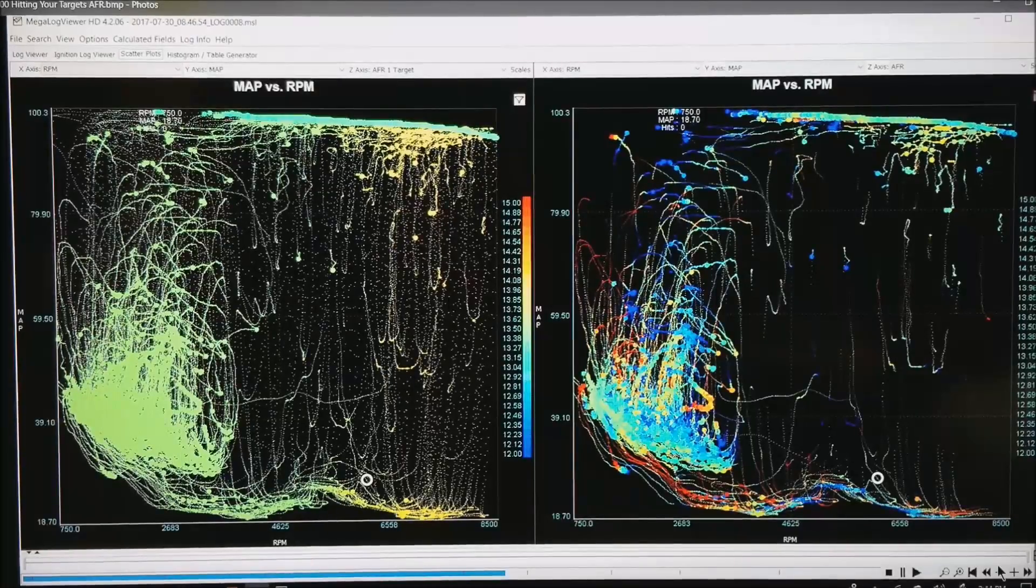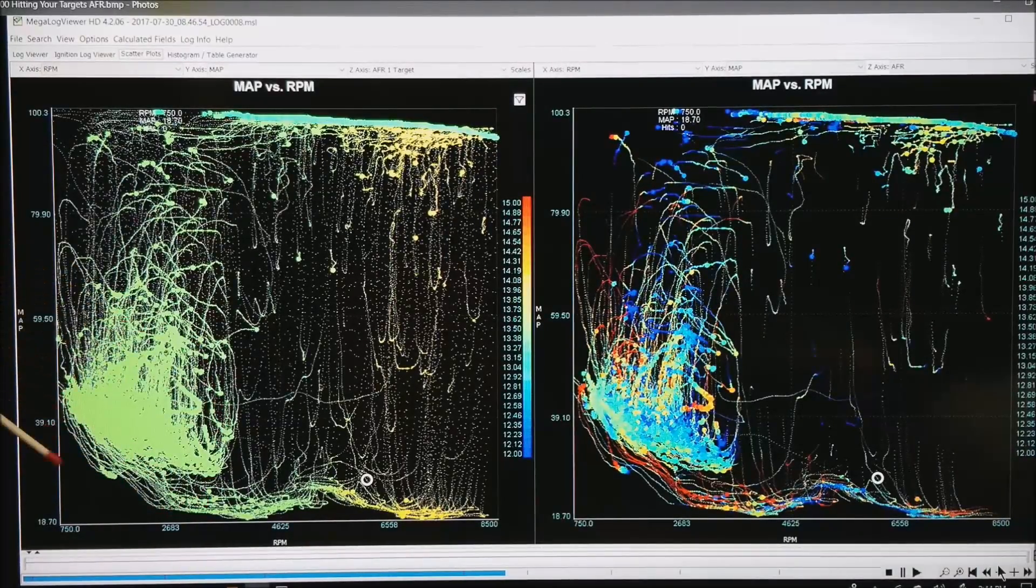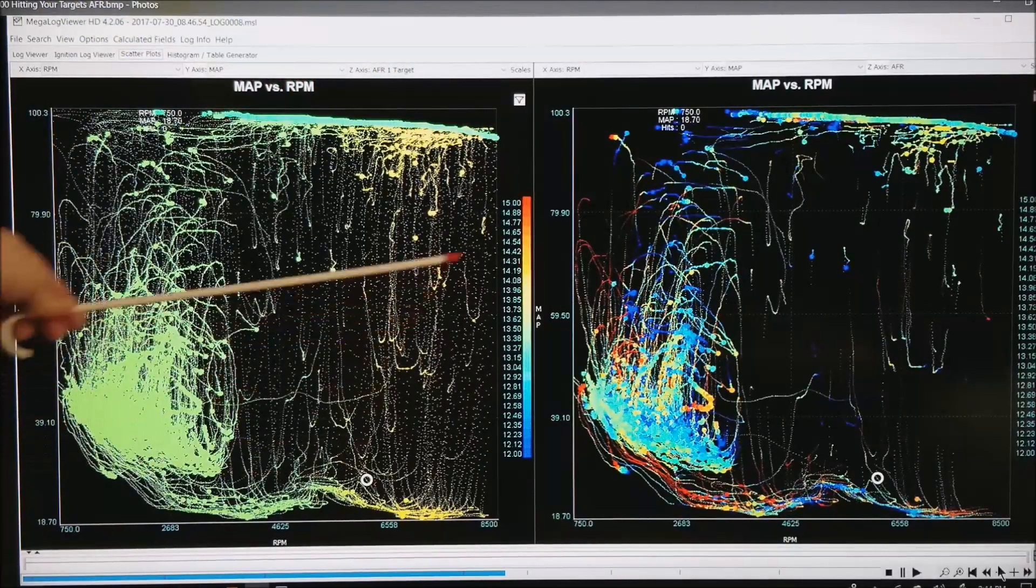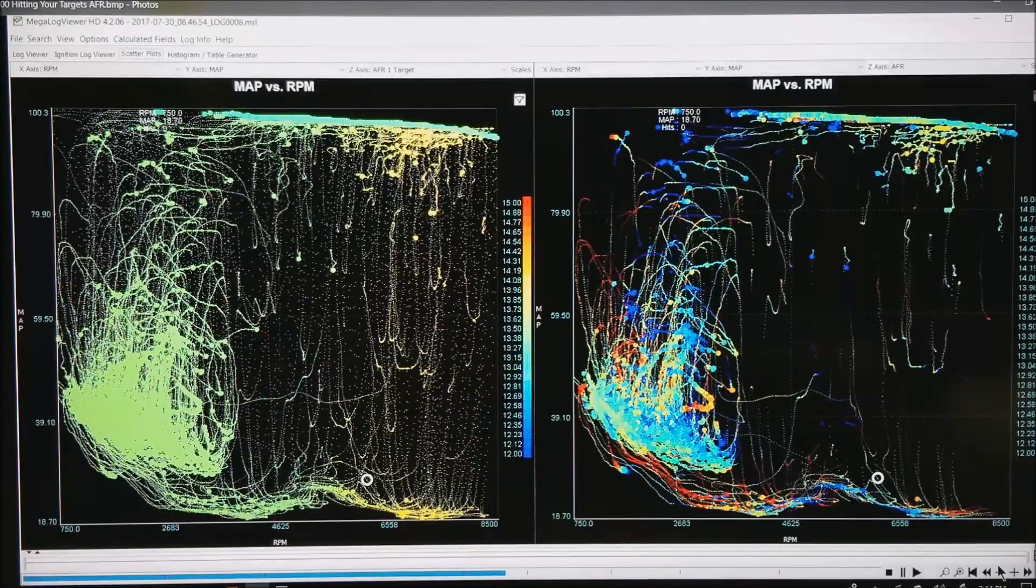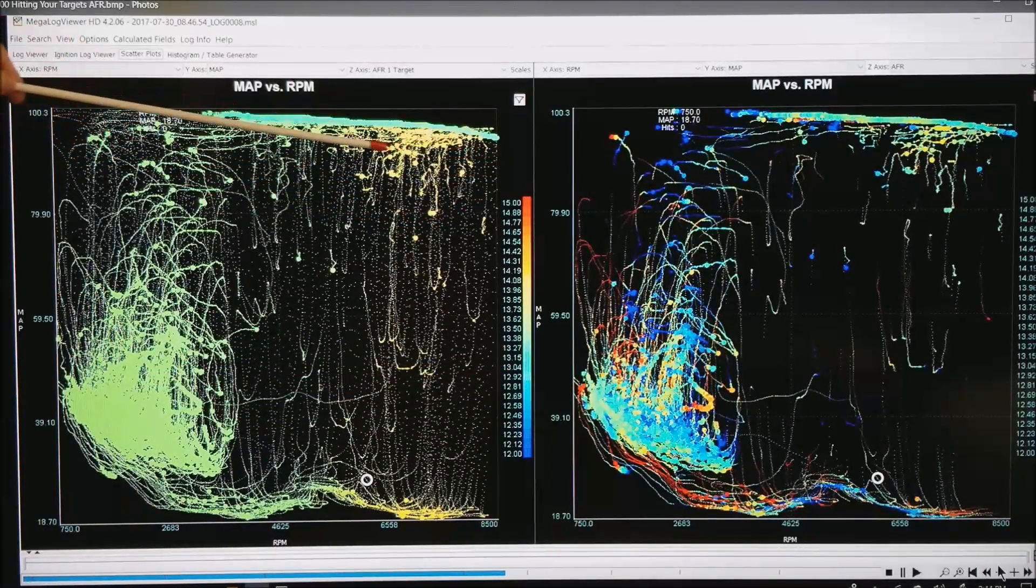Now what I am showing in scatter plots is the target AFR. Notice how it is green all the way along the full power area plus the idle area. Meaning about 12 or 13 AFR target. I let it go a little bit leaner as I back out of the throttle.